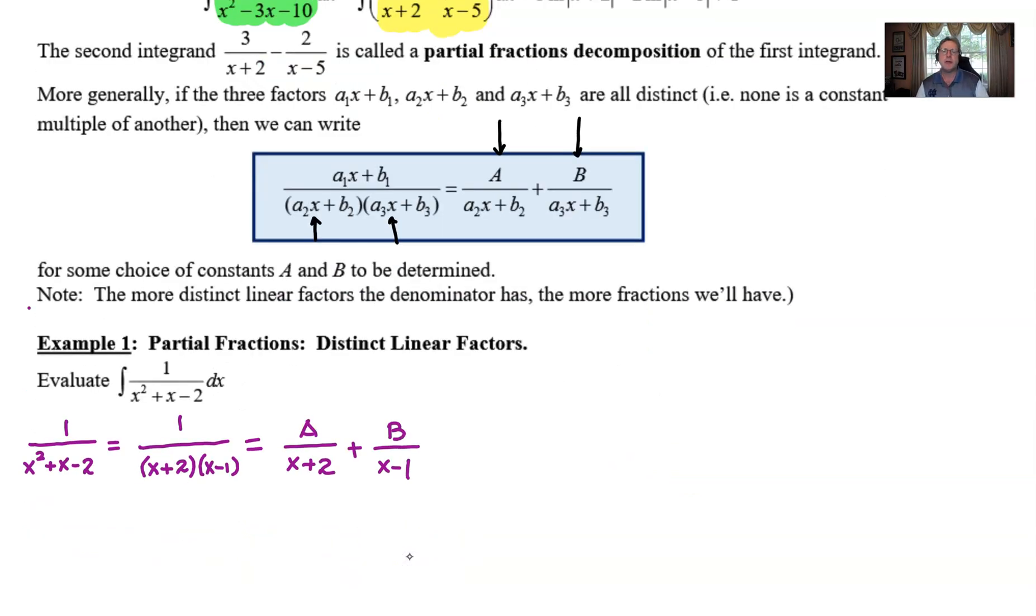What do we do then? From this point, we're going to clear away everything. We want to multiply everything by the common denominator, which in this case is going to be (x+2)(x-1). What that will give us is 1 = A(x-1) + B(x+2).